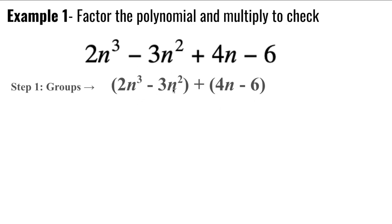In the first binomial, I notice that two and three have no common factors, but n to the third and n squared both have n squared in common. In the second binomial, four n and six have two in common. So in step two, I'm going to factor out that greatest common factor from both of those binomials.